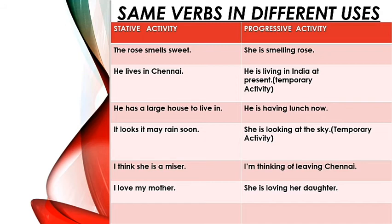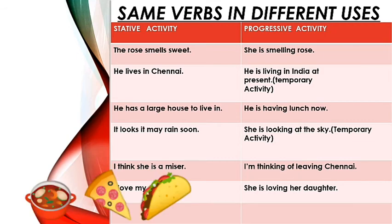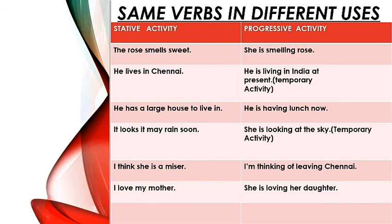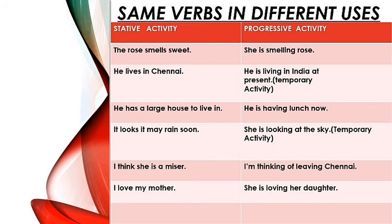He lives in Chennai — woh Chennai mein rehta hai. He is living in India at present — temporary activity. He has a large house to live in — uske paas ghar hai, isthir avastha hai. He is having lunch now — woh abhi lunch kar raha hai, yeh progressive activity hai. It looks like it may rain soon — aisa lagta hai, isthir avastha. She is looking at the sky — temporary activity, woh abhi aasmaan ki aur dekh rahi hai. I think she is a miser — mujhe lagta hai woh kanjoos hai. I am thinking of leaving Chennai — main Chennai chodne ki soch raha hoon. I love my mother — main apni maa se pyaar karta hoon. She is loving it now — yeh ek progressive activity hai.